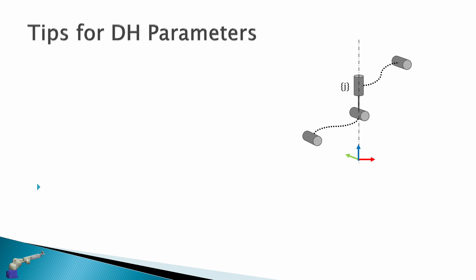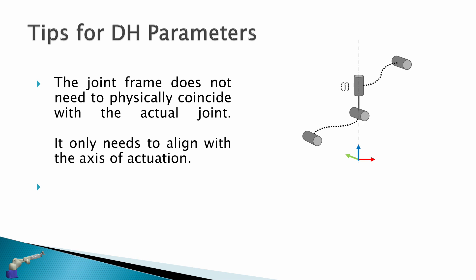Here are some tips for DH parameters. Firstly, the joint frame does not need to physically coincide with the actual joint — it only needs to align with the axis of actuation. In this depiction, the physical joint might be up here but the frame of reference for this joint can be anywhere along this axis. It doesn't need to be on the actual joint.